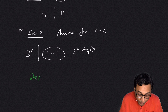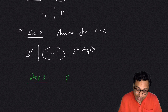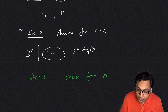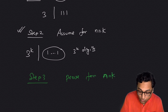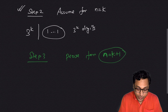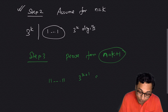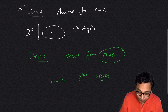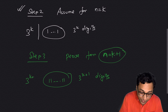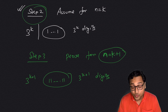Step 3 is to prove the statement for n equals k plus 1. That means: if you have a repunit with 3-to-the-power-(k+1) digits, show that this number is divisible by 3 to the power k plus 1, using the induction assumption from step 2.